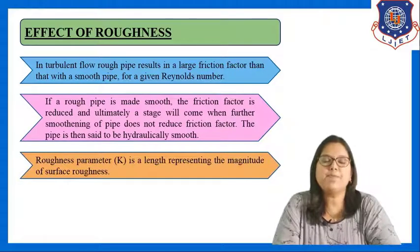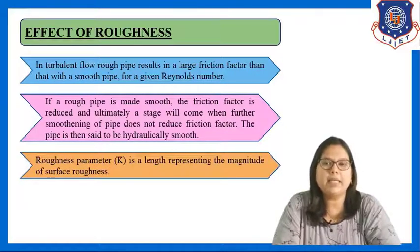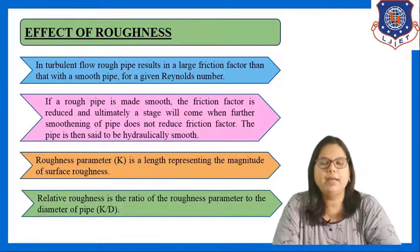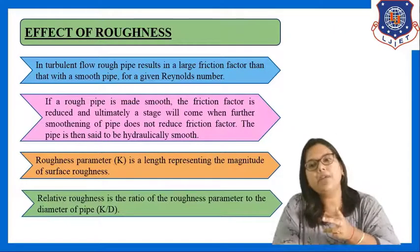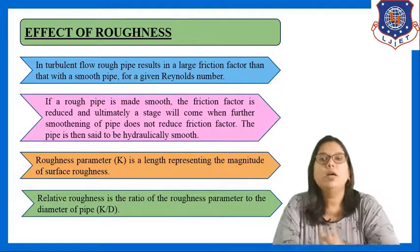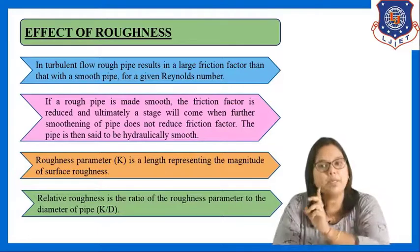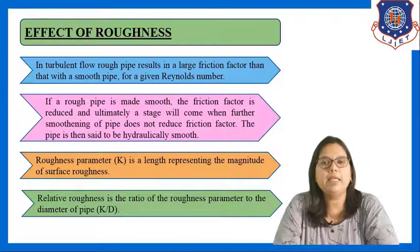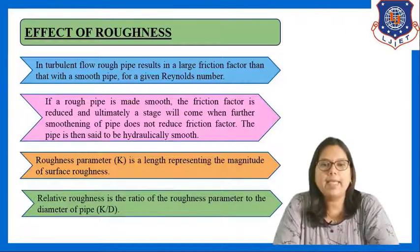Roughness parameter k is a length representing the magnitude of surface roughness. Relative roughness is the ratio of roughness parameter k to the diameter of pipe d, that is, k/d.